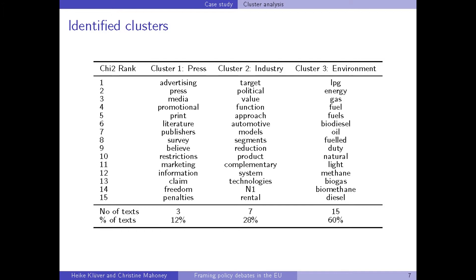The cluster analysis arrived at three different clusters. The first is the press cluster, identified by words like advertising, press, media, and promotional — clearly talking about the impact of the legislative proposal on the media. The second is the industry cluster, capturing arguments about the impact on the automotive industry in Europe, using words such as target, political, value, automotive, model, segments. The third cluster — environment and alternative industry — is employed by environmental groups and alternative automobile industry groups producing electric cars, hybrid cars, and biofuels, arguing about the superiority of alternative vehicles and the global environmental impact of the proposal.